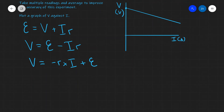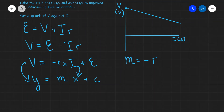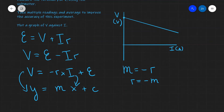Notice that this is now in y equals mx plus c form, where m is the gradient and c is the intercept. With V on the y-axis and current I on the x-axis, the gradient m will be the negative value of the internal resistance — so R equals the negative of the gradient. This gives a positive value because the gradient is negative (slanting downwards), and the double negative gives a positive. Additionally, the y-intercept is equal to the EMF.